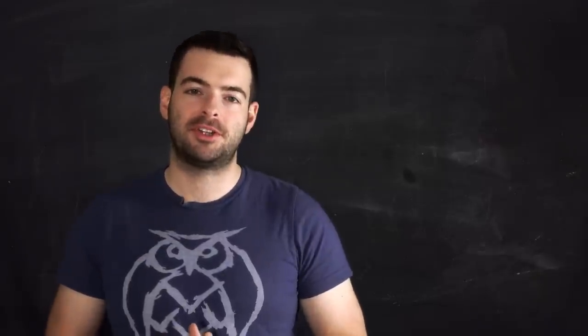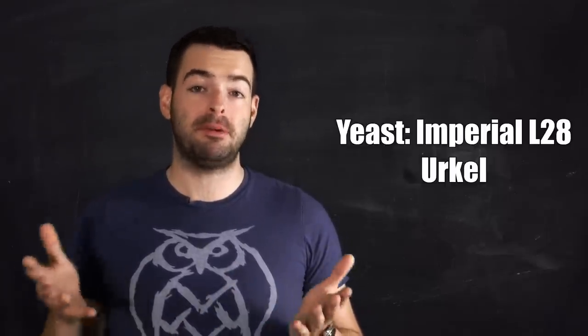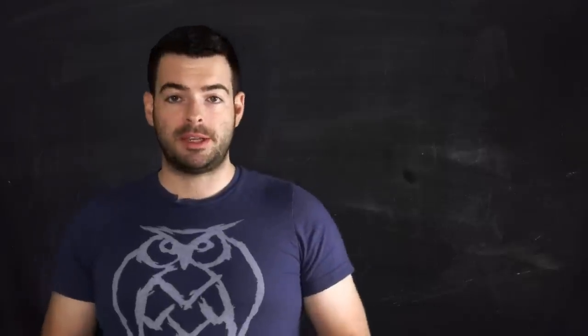For yeast on this brew, we're going to be using pretty much a classic strain for the Czech Pilsner. This is Imperial L28 Urkel yeast, which is, well, unsurprisingly, this is the Pilsner Urkel strain. Pilsner Urkel is Pilsner Original. That's the original Pilsner that was made in Pilsen, pretty much unchanged ever since the 1840s, which is pretty cool. And that's a nice beer. So I figured we would use their yeast.